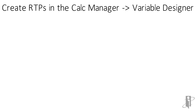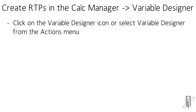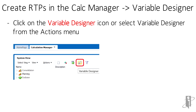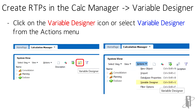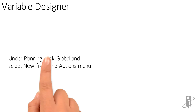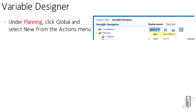To create a runtime prompt variable, go to the Calc Manager and open the Variable Designer by clicking the Variable Designer icon or selecting Variable Designer from the Actions menu. In the Variable Designer, in the Variable Navigator panel, select Planning then Global.